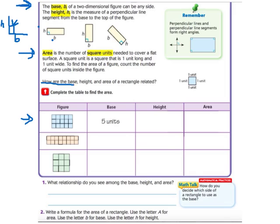So how are the base, height, and area of a rectangle related, is the question. So we're going to complete the table to find the area of these shapes. So the base, the bottom, they said is 5. 1, 2, 3, 4, 5. We need to find the height, which is 1, 2, 3, 3 units.